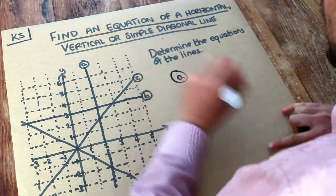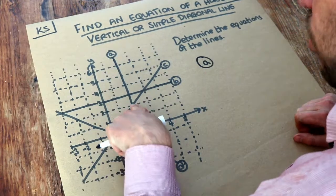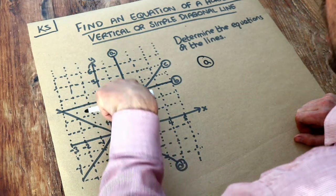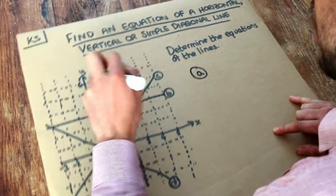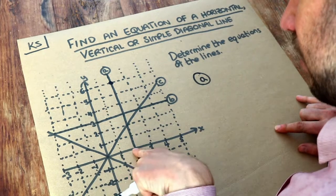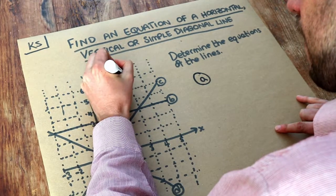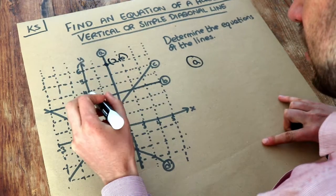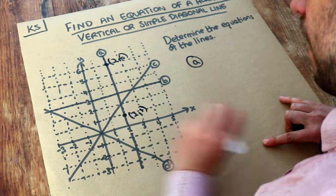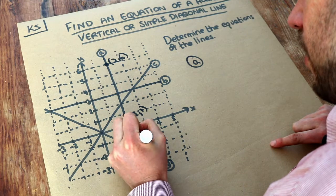Let's look at line A first and see if we can find something in common to all of the points on this particular line. If we take this point here, we can see that's (2, 6). If we look at another point on A, we've got (2, 1). And let's take another point: (2, -1).